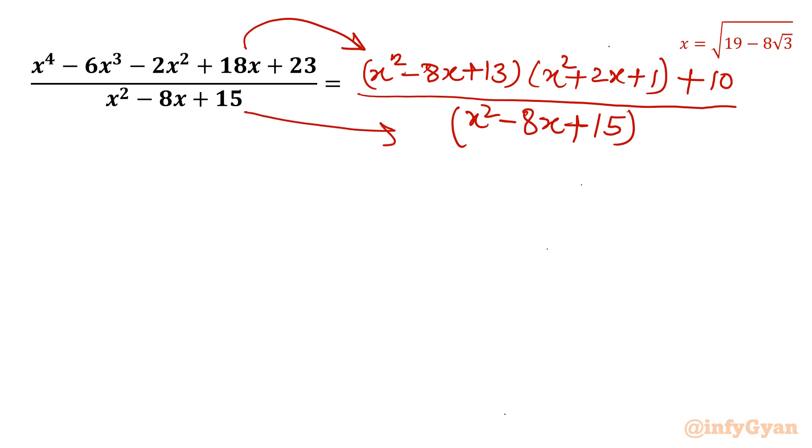So now I am going to put the values. Values we know. This bracket is 0. This bracket is 0. So this term is completely 0. So I will write thereafter: 10 over (x^2 - 8x + 15).